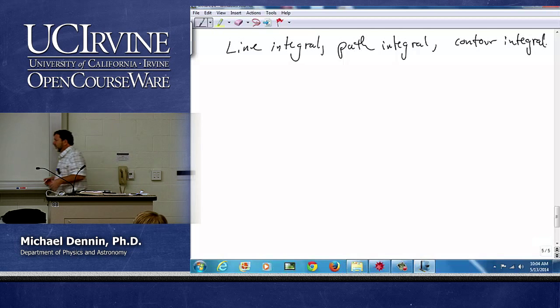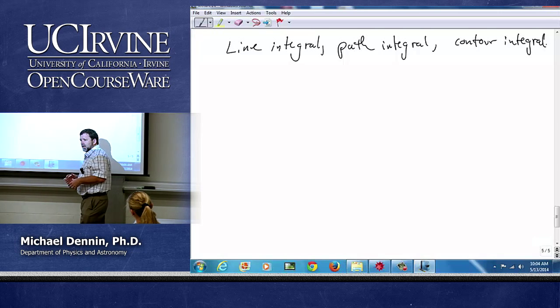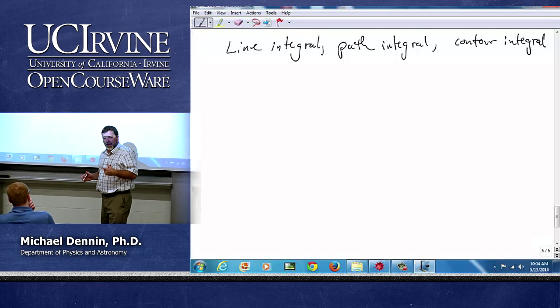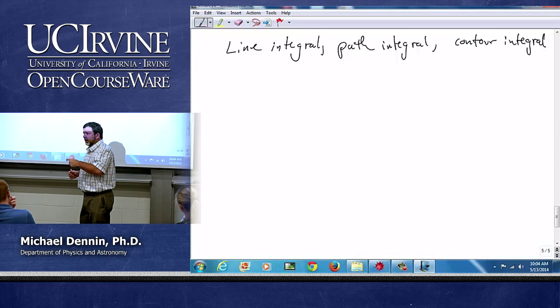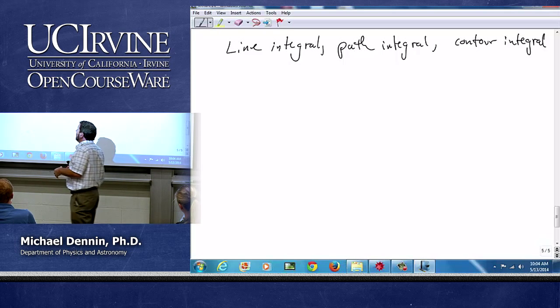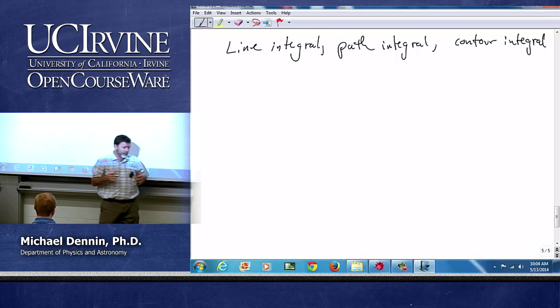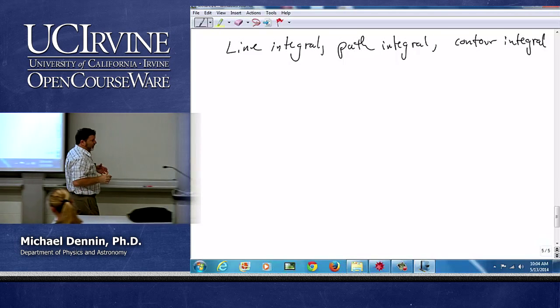To me, at the end of the day, these three are the same thing because conceptually we're taking a function and adding up pieces of the function along some path or curve. Why do we use the different words? Typically, not always, line integral gets used when what I'm adding is a scalar function.